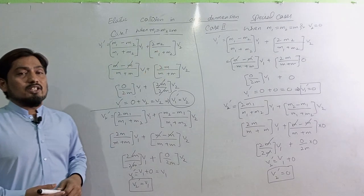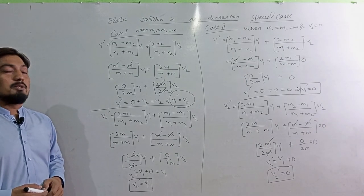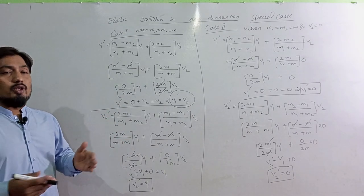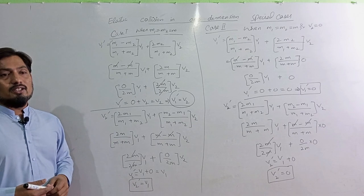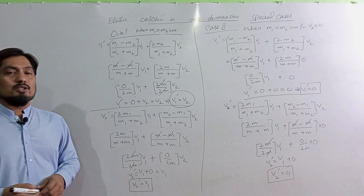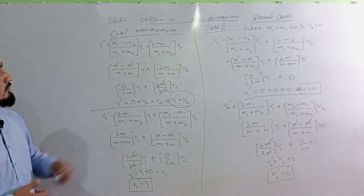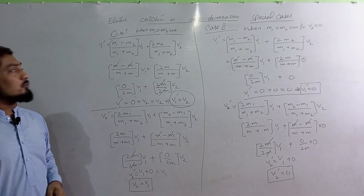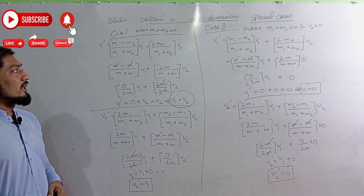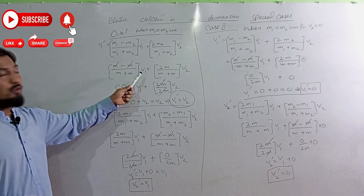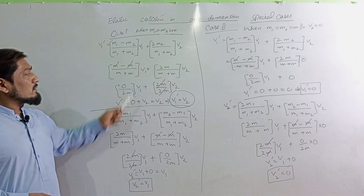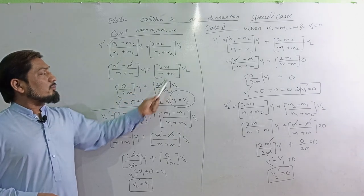When mass M1 is equal to M2. For V1', we substitute M1 equals M into the equation: V1' equals M1 divided by M1 plus M2 times V1 plus M2 minus M1 divided by M1 plus M2 times V2. This becomes M divided by M plus M times V1 plus M minus M divided by 2M times V2.